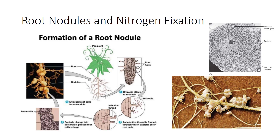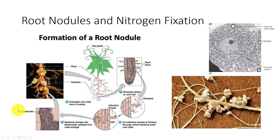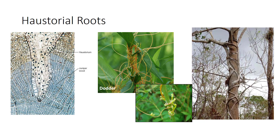For most plants, the scarcity of nitrogenous compounds in the soil is a growth-limiting factor. In a small number of plants, especially legumes, a symbiotic relationship has evolved with nitrogen-fixing bacteria of the genus Rhizobium. Rhizobium infects the host's root hair and triggers the cells of the cortex to divide and produce a root nodule. Rhizobium gets an oxygen-free atmosphere and sugars, and the legume gets nitrogenous compounds.